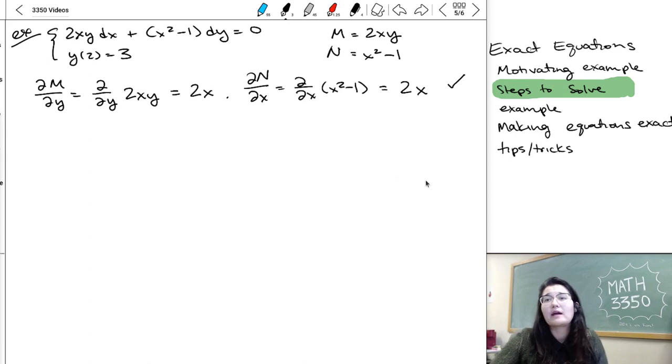If you're having trouble remembering, note that we're always crossing things over. The thing that multiplied dy, we take the partial with x. The thing that multiplied dx, we take the partial with y. It's easy to kind of mix those up.